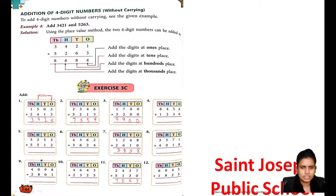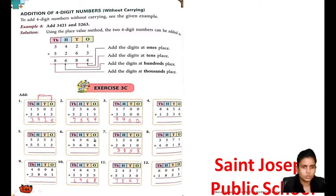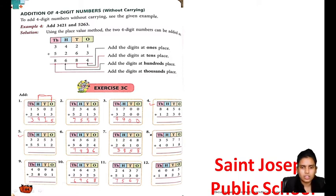Now I am taking question 10. 3 plus 5 is 8. 4 plus 2 is 6. 3 plus 6 plus 3 is 9. 4 plus 2 is 6. Again 2 plus 4 is 7. So it is clear. The rest of the questions — 4, 5, 8, 12, 9 — are your homework.